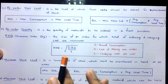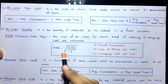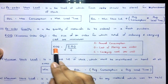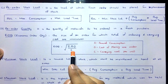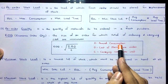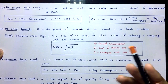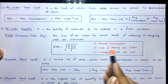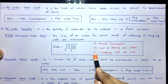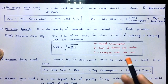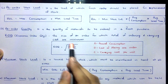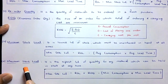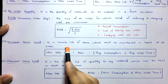The EOQ concept and problems were covered in a separate video — the link will be in the description. The EOQ formula is the root of (2AO ÷ C): A is annual consumption or annual demand, O is cost of placing one order, and C is carrying cost or holding cost per unit. Use this formula to calculate EOQ. Then we have minimum stock level and maximum stock level.